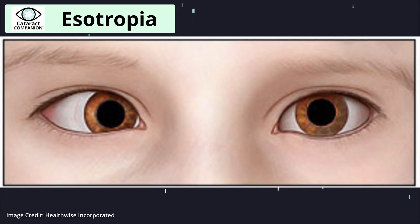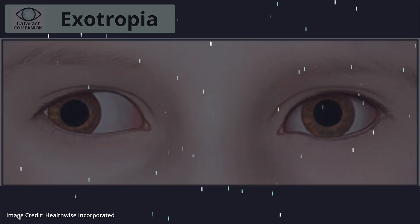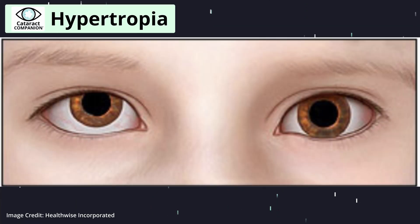Strabismus is any misalignment of the eyes. There are different types of strabismus. The most common ones are esotropia, where the eyes are crossed inwards; exotropia, where one or both eyes are deviated outwards; or hyper or hypotropia, where one eye is deviated higher and one eye is deviated lower than the other. Strabismus can commonly be referred to as having a lazy eye, being cross-eyed, or having a wandering eye.